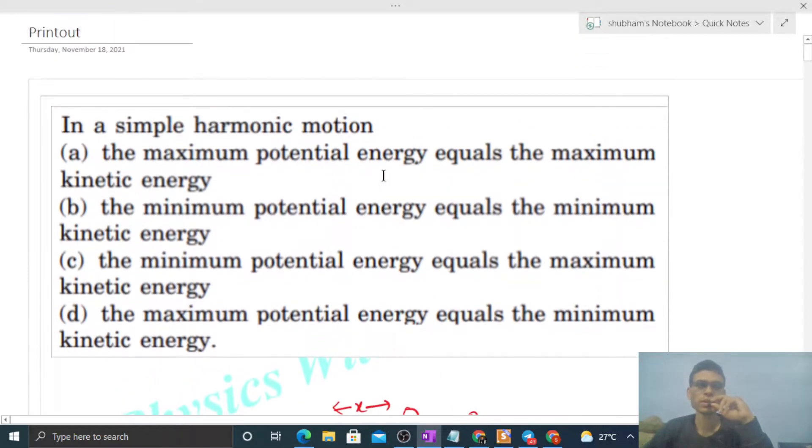Now you can check the options. The maximum potential energy equals the maximum kinetic energy. Of course, the minimum potential energy equals the minimum kinetic energy. Of course. Here, what is the maximum for both? Half of k into A square. Minimum for both? Zero.